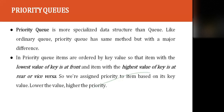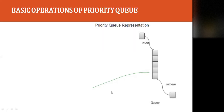A priority queue is a more specialized data structure than a queue. Like an ordinary queue, it follows a similar method, but with a major difference: in a priority queue, items are ordered by key value so that the item with the lowest value is up front. We assign priority to items based on their key — the lower the value, the higher the priority.